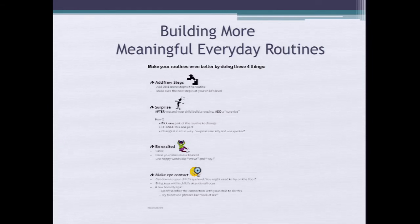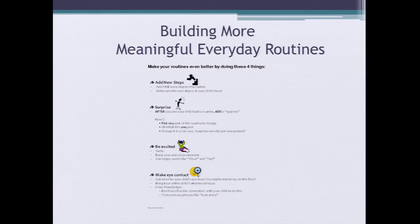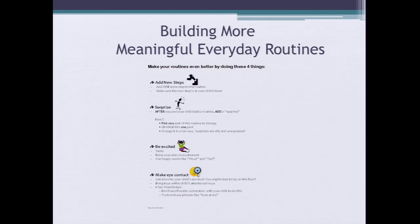We talk about building everyday routines — adding new steps and having little surprise elements. Because once you have the routine established and you change something up, it's kind of a surprise, and a lot of times children will look at you naturally and you'll get more of that reciprocity going. So we try to build in those surprises pretty soon after the routine is established. We want to be really excited — this is play, it's supposed to be fun — and we're making eye contact with the child. We're scaffolding and setting up the environment because we want the child to look at us; we just don't want to put a demand on them to do that.